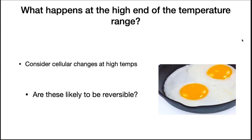Changes at high temperature are a different story. At these temperatures, proteins unravel, they denature, and often precipitate out of solution. Membranes also become too fluid and tear apart, causing cellular contents to leak into the environment. Are these likely to be reversible? Think about what happens to an egg when you heat it — when you cool it down, it doesn't go back to being a raw egg. So microbes tend to be killed at high temperatures. High temperatures are a very effective way of controlling microbial growth, and we'll talk about that in the next lecture.